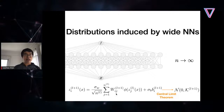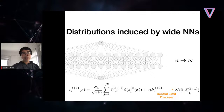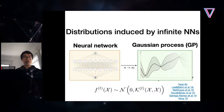When we let the width go to infinity, the formula becomes a sum of a large number of random variables. By the central limit theorem, the output converges to a Gaussian process with mean zero and kernel k_{l+1}. The mean is zero because parameters are initialized to zero mean. This framework is very general and applies to many architectures: fully connected networks, convolutional networks, self-attention, etc.